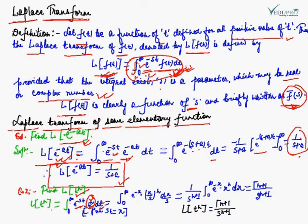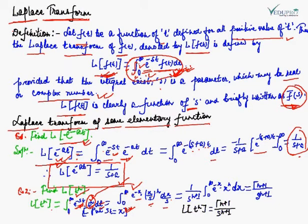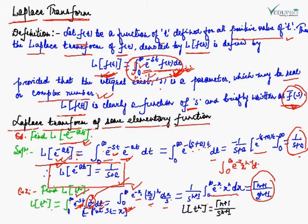To evaluate this integral, we substitute st = x. On substituting st = x, the integral changes: in place of st we put x, so e^(-x); in place of t we get x/s, and (x/s)^n dx/s. Simplifying, since s is a parameter it can be taken out, giving integral from 0 to infinity of e^(-x) x^n dx, divided by s^(n+1). This equals gamma(n+1) / s^(n+1), because we know that integral from 0 to infinity of e^(-x) x^(n) dx = gamma(n+1). Therefore, Laplace transform of t^n = gamma(n+1) / s^(n+1).